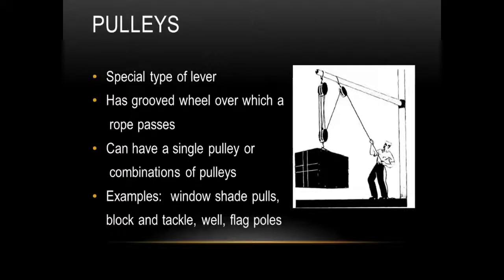The next simple machine is a pulley which is basically a special type of lever. It has a grooved wheel which ropes pass through. And this is a complicated pulley system over here that is actually called a block and tackle. But a pulley is pretty much a grooved wheel where ropes pass through. And you can have a single pulley or you can have a combination of pulleys. The more pulleys you have the easier the work is for you. A couple examples that we might be familiar with: the window shade pulls whenever you pull down the window shades. Those have pulleys. Block and tackle which is this picture over here. A well whenever they pull up the water from a well that's a pulley. And flagpoles have pulleys also to put the flags up on top of a flagpole.